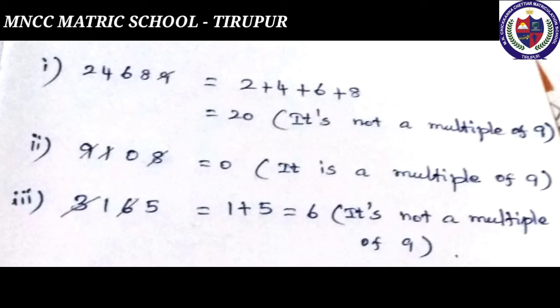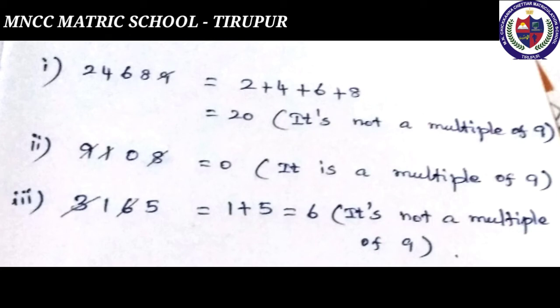Second: 9,108 — casting out 9s means finding which two digits add to 9 and cancelling them. Strike out 9; then 1 + 8 = 9, so cancel 1 and 8. We are left with 0 — it is a multiple of 9. Third: 3,165 — which two digits add to 9? 6 and 3. Strike out 3 and 6, leaving 1 and 5. Add: 1 + 5 = 6 — it is not a multiple of 9.